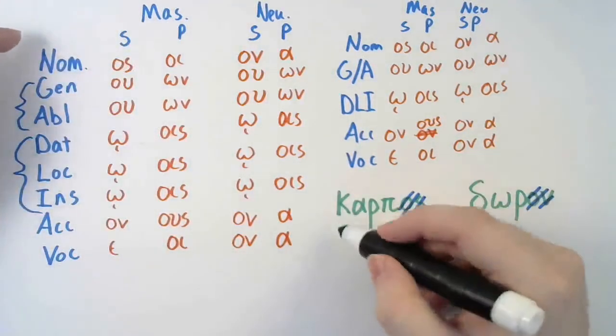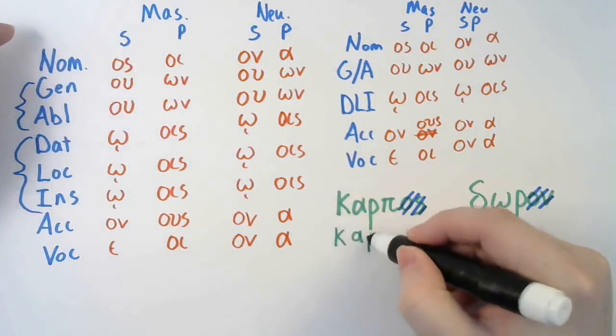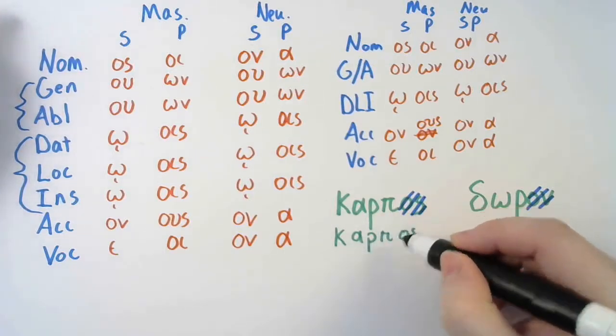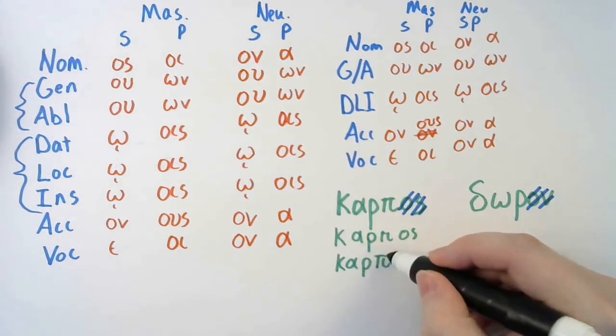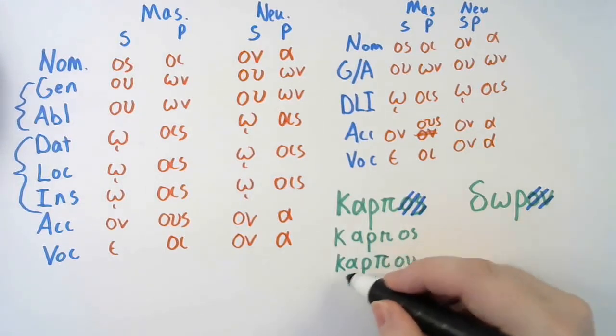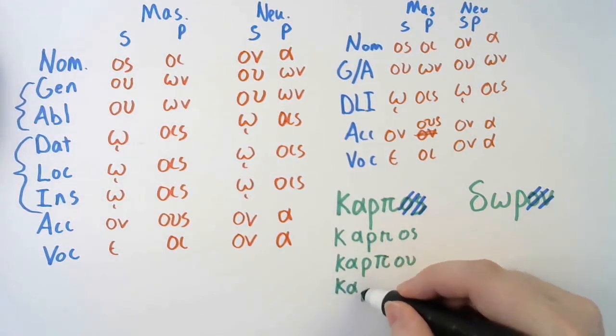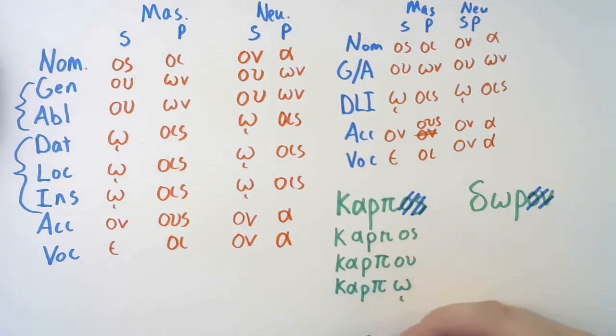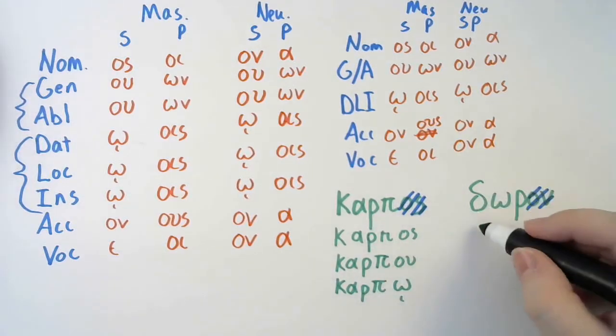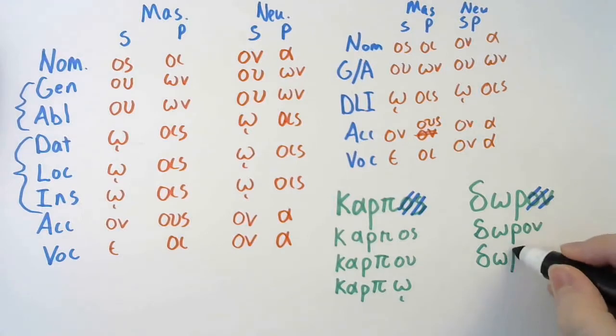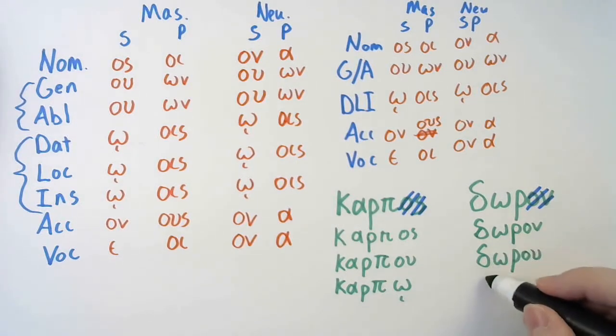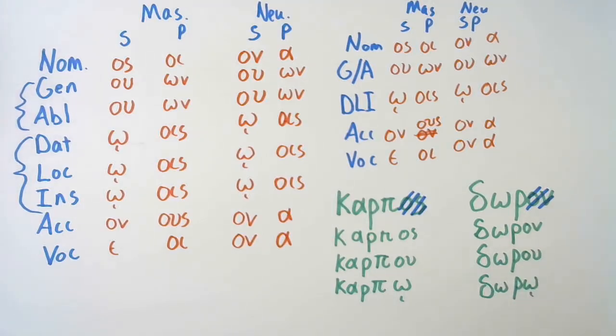To decline, we would say karpos. That's a horrible spelling. Karpu. Karpo. And so on and so forth. And for doron. Doron. Doru. Doro. And so on and so forth.